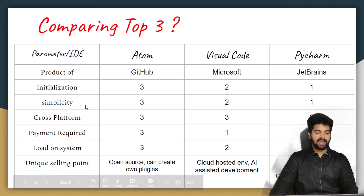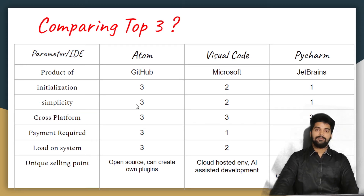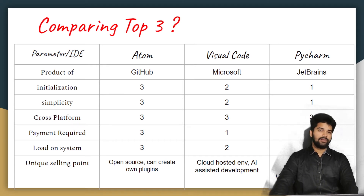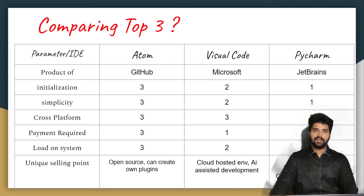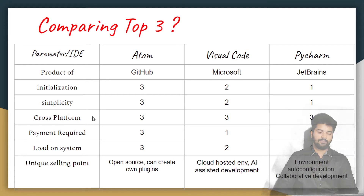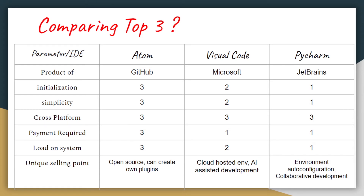Coming to Simplicity — by simplicity I mean if you are a beginner, how simple it is to go through the UI and find what you want to do. Atom has a very minimal design which makes it very easy for any beginner to navigate the interface. Visual Code stands in the middle because it is quite crowded with features but not too much — if you are fairly intermediate you can easily identify what is what. PyCharm is very overwhelming for a beginner since there are many buttons you don't know what they are for. For Cross Platform, all three IDEs perform well on Mac, Linux, and Windows, so they are all equal in this aspect.